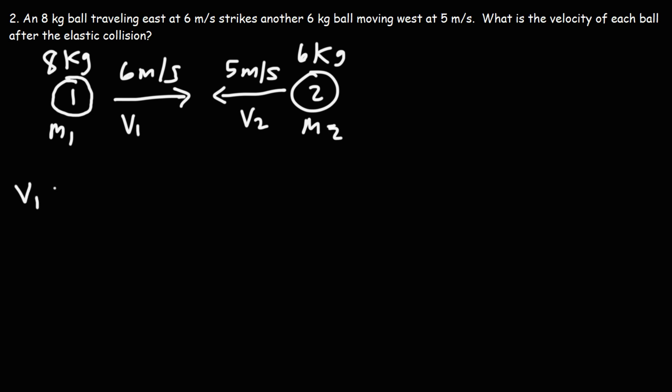So let's start with V1 prime. Let's write the formula first. So it's the difference of the two masses divided by the sum of the two masses times V1 plus 2 times the second mass divided by the sum of the two masses times V2.